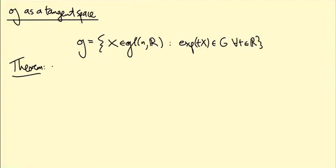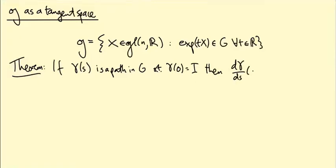So here's the theorem. If γ(s) is a path in G, in other words, for each element s of the real numbers, γ(s) is a matrix in G such that γ at zero is the identity. So at time zero, you're passing through the identity matrix, then dγ/ds at s equals zero is in little g. What does this mean?